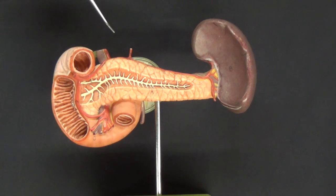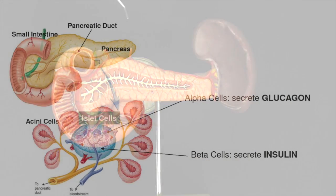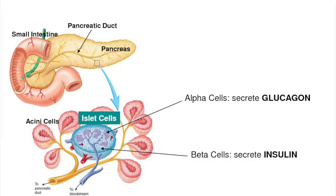The pancreas is primarily an exocrine gland and is mainly involved in digestive processes. However, about one percent of the tissue is endocrine tissue, spread throughout the pancreas in specialized areas known as pancreatic islets. Two of the hormones we are going to look at are secreted in these pancreatic islets.